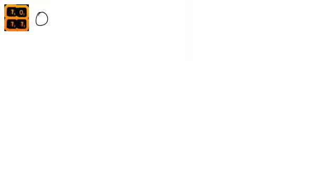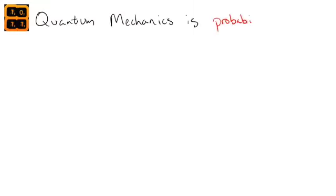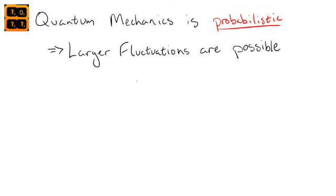But this isn't the end of the story. Quantum mechanics is inherently probabilistic, meaning that there would be some chance that a larger-than-expected fluctuation that would result in something like the Great GRB Wall could occur.